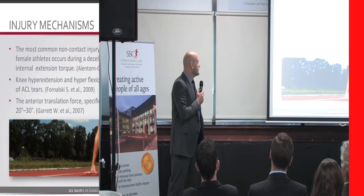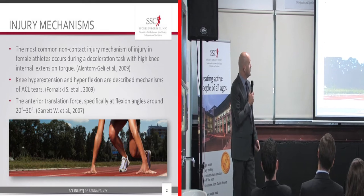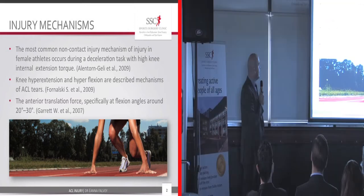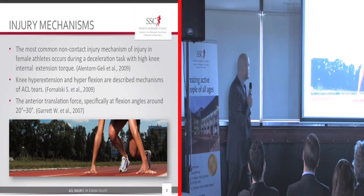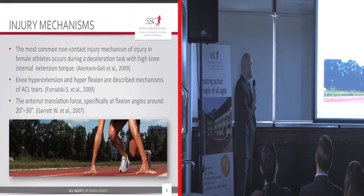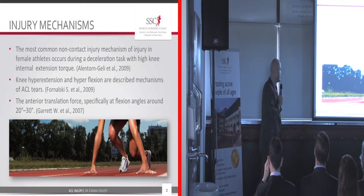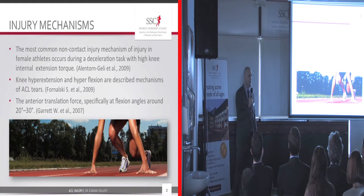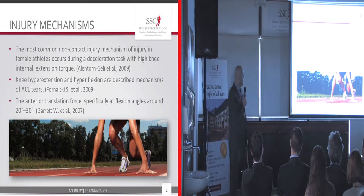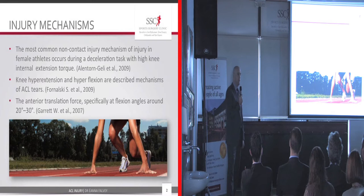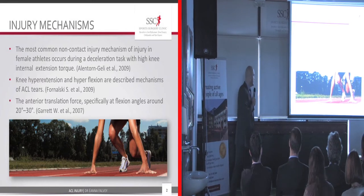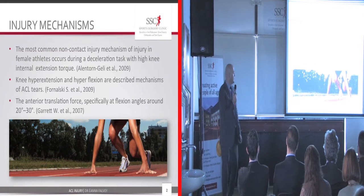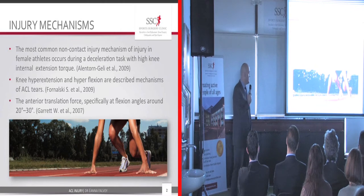As most of us know, the most common injury is a non-contact mechanism, particularly in female athletes, during a deceleration task with a high knee internal and external extension torque. ACL injury in Ireland — we would see less hyperflexion, but it is a mechanism of injury, particularly in skiing. The majority of the injuries we see would be in field-based sport, where it's a hyperextension mechanism. In that position, the anterior translation force, specifically at flexion angles around 20 to 30 degrees, is where the injury mechanism occurs.